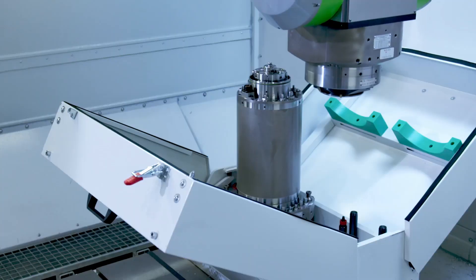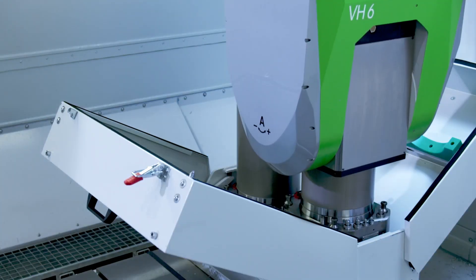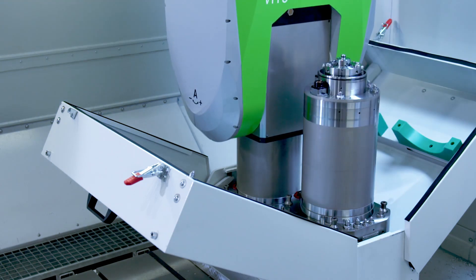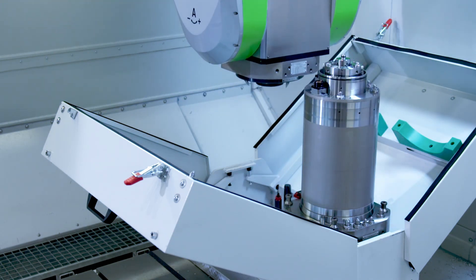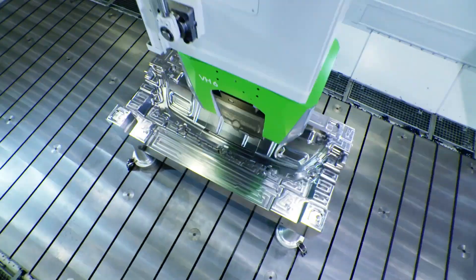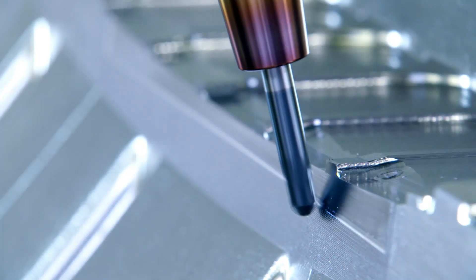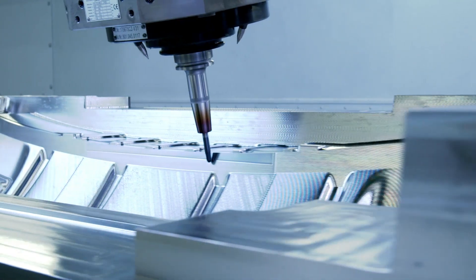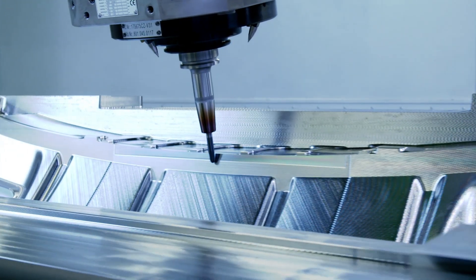Due to the multiple spindle technology, the VH6 handles all processing steps with ease, from roughing to finishing, all in one setup, without the need to change machines. This reduces setup times and therefore production costs.